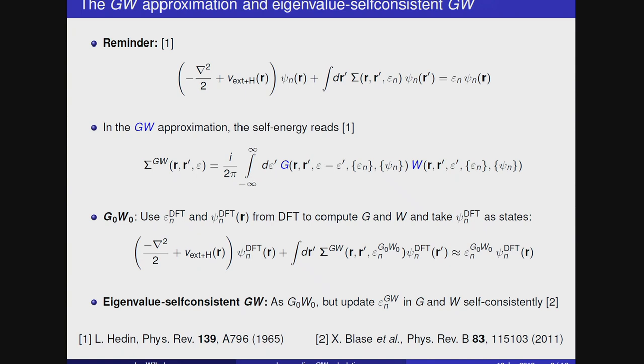There are several types of self-consistency in GW. I will use eigenvalue self-consistency GW in the following, which has been shown to give good results for molecules. In this eigenvalue self-consistency GW, you once compute the G0W0 eigenvalues, then you plug them again into W and G, you get a new sigma, and then you re-evaluate the GW eigenvalues, and you do this until you reach convergence.